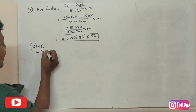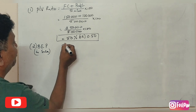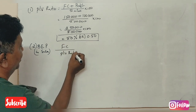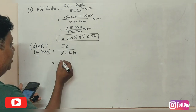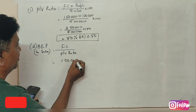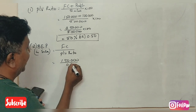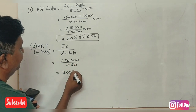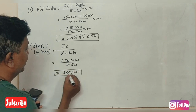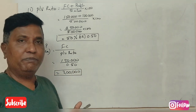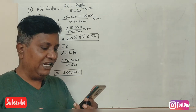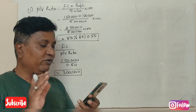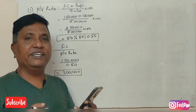For break-even point in sales, the formula is fixed cost divided by PV ratio. Fixed cost is 1,50,000 divided by 0.50, which gives break-even sales of 3,00,000 rupees.